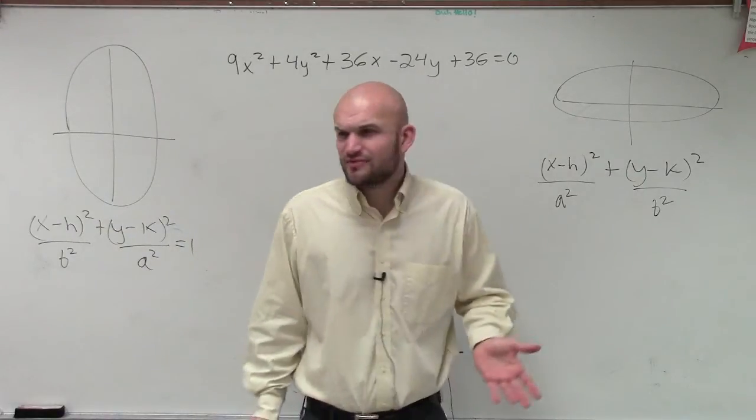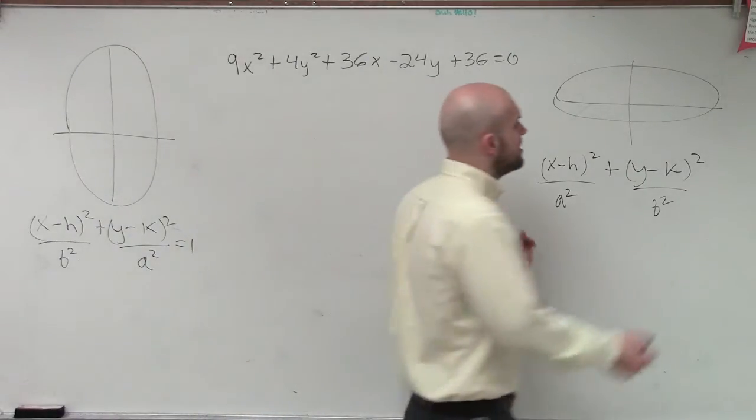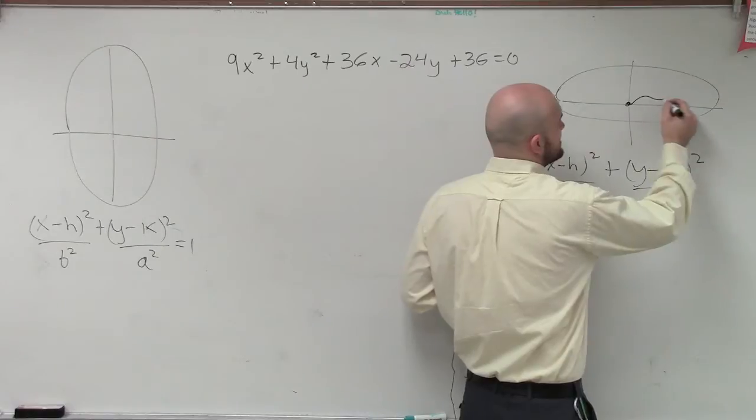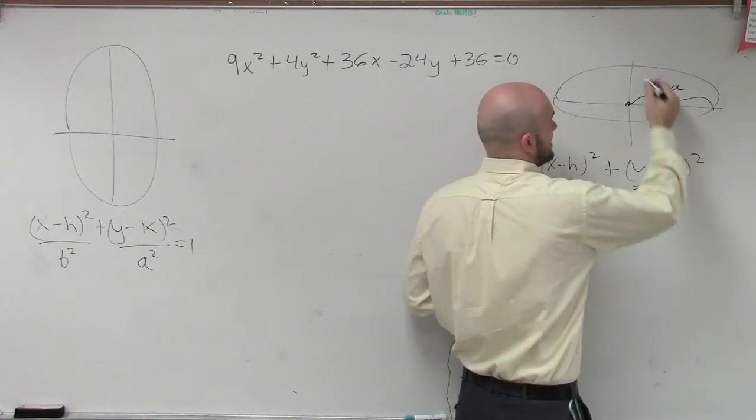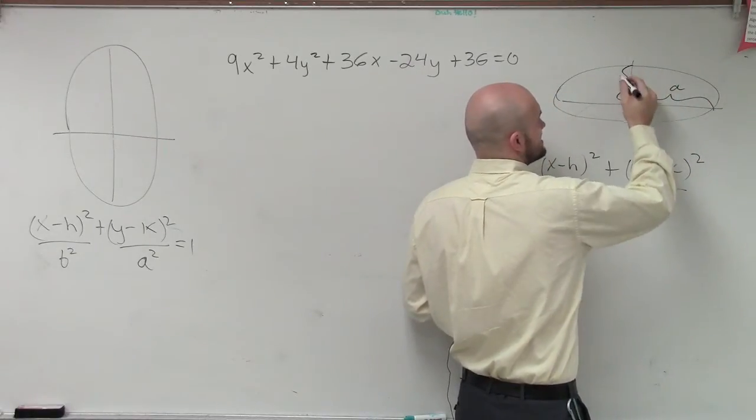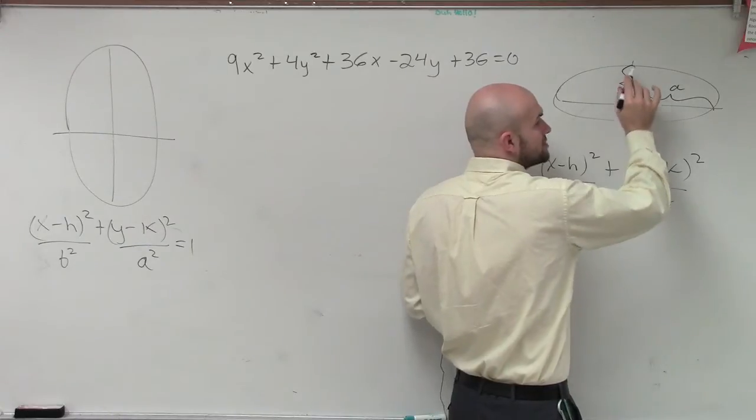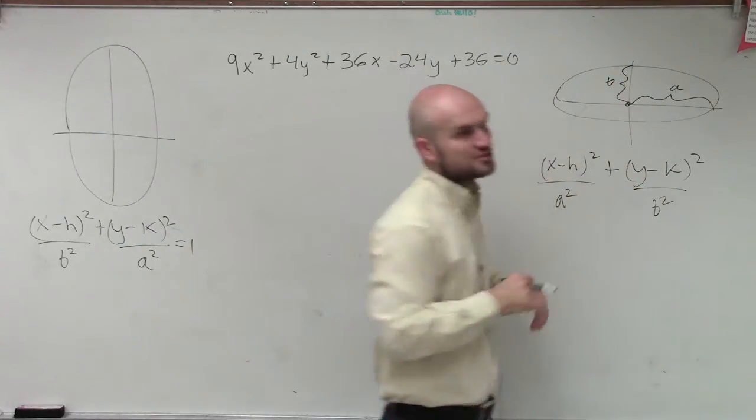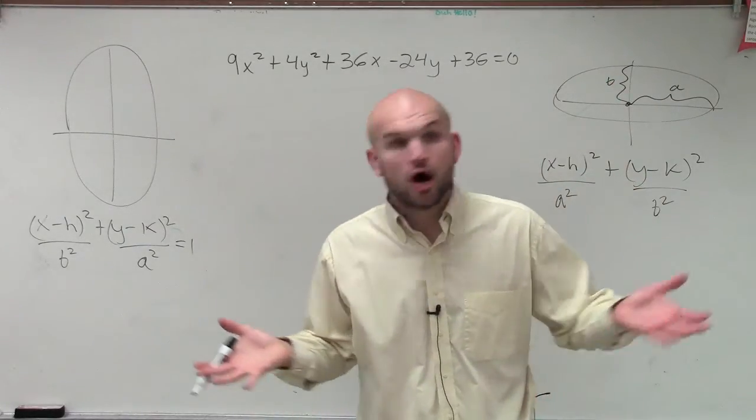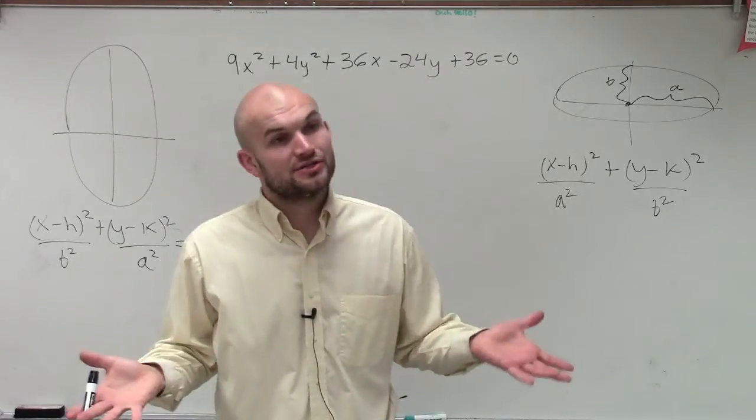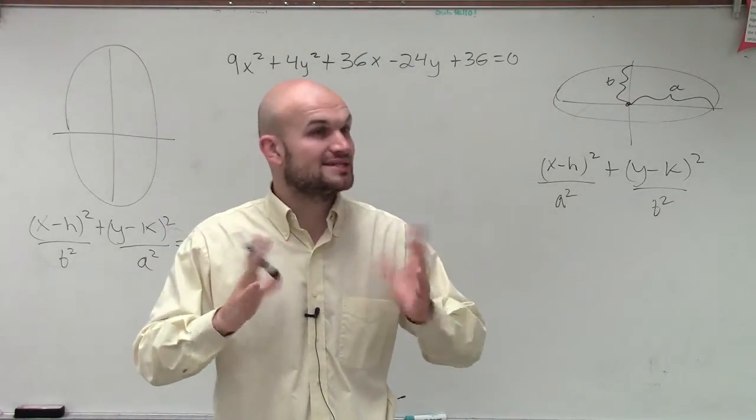You might say, what is the distance of a and what's the distance of b? Remember, a is the distance from your center to your vertice, and b was the distance from your center to a vertice on your minor axis. So a is always larger than b, unless you're dealing with a circle where they would actually be exactly the same.